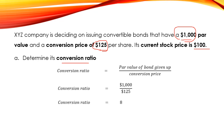As a result, the conversion ratio is 8. So in this case, you can convert one bond for eight shares.